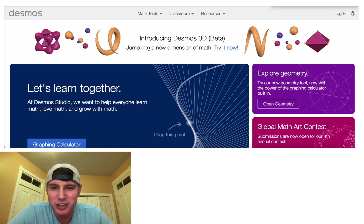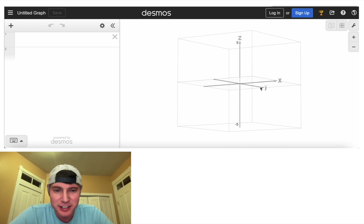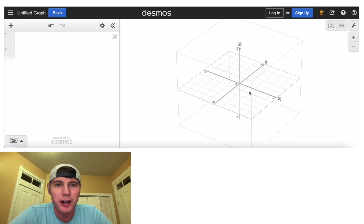The first step, you go to desmos.com and you find Desmos 3D in beta and you click try it now. And here it is right here. It's in three dimensions, X, Y, and Z.